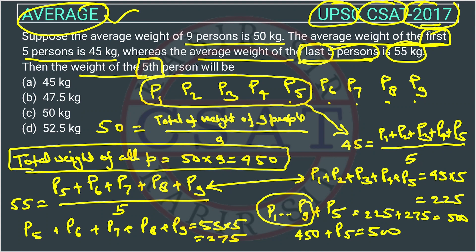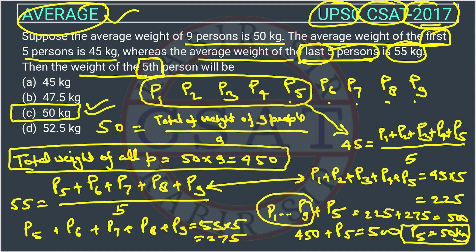Solving this, p5 is equal to 50 kg. So the weight of the fifth person is 50 kg — that is our answer. If you understand this basic concept, you can skip various steps and do it very fast in the exam. First understand the basic concept, then you can do the fast calculation and skip some steps to solve this question quickly.